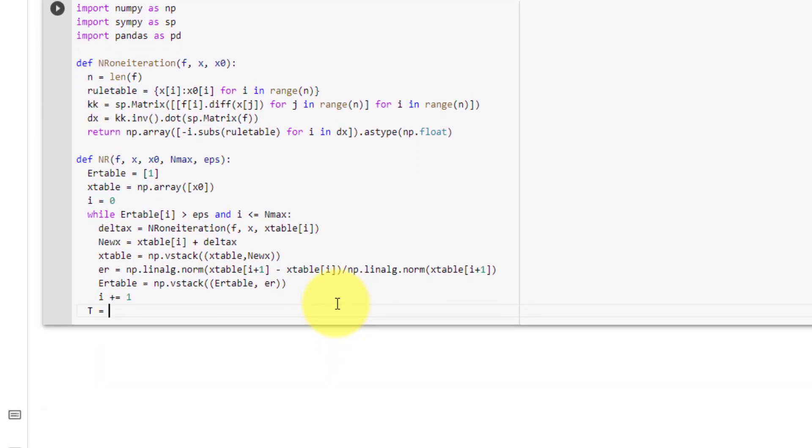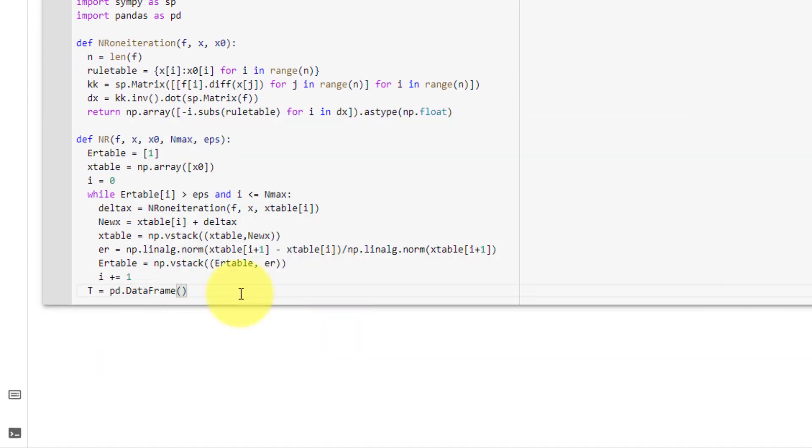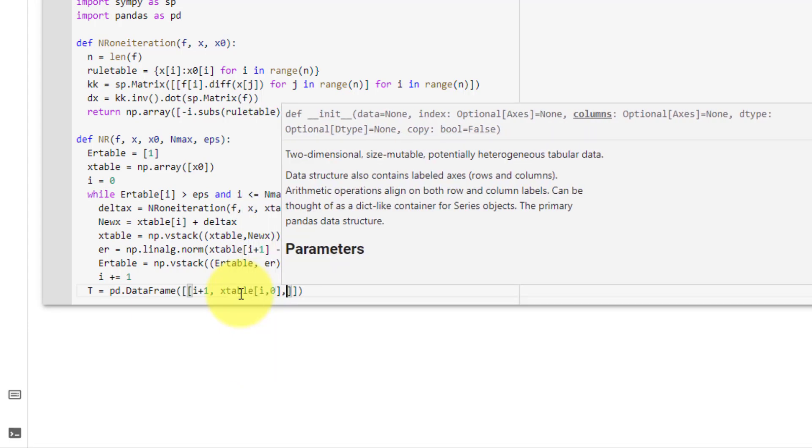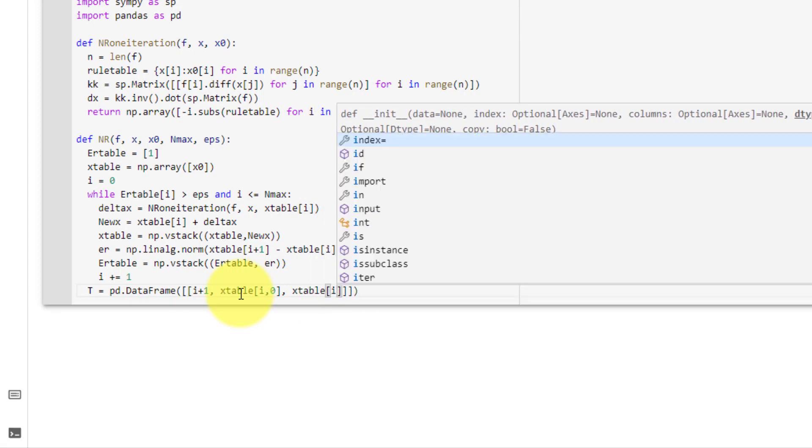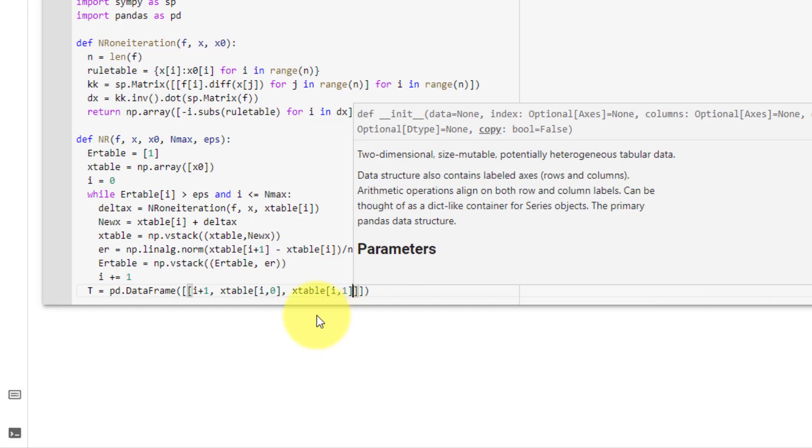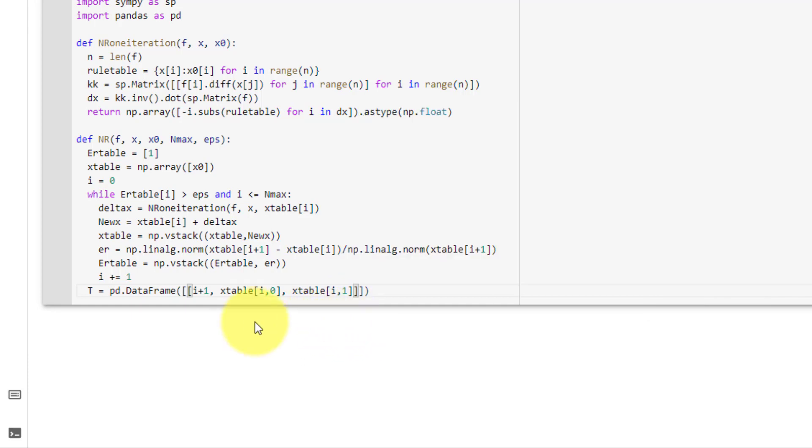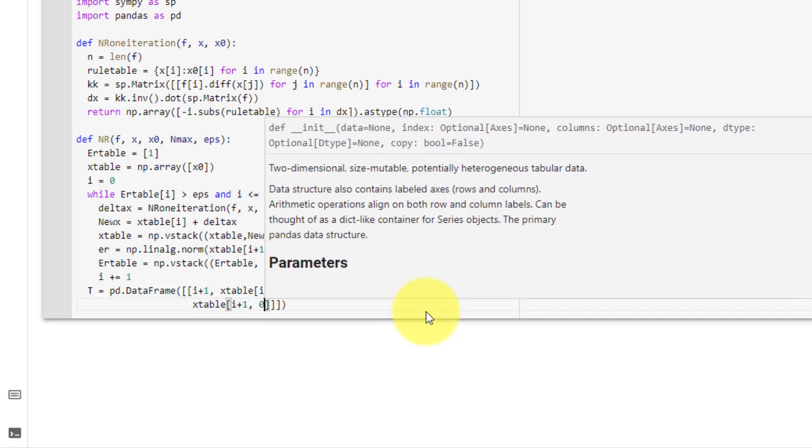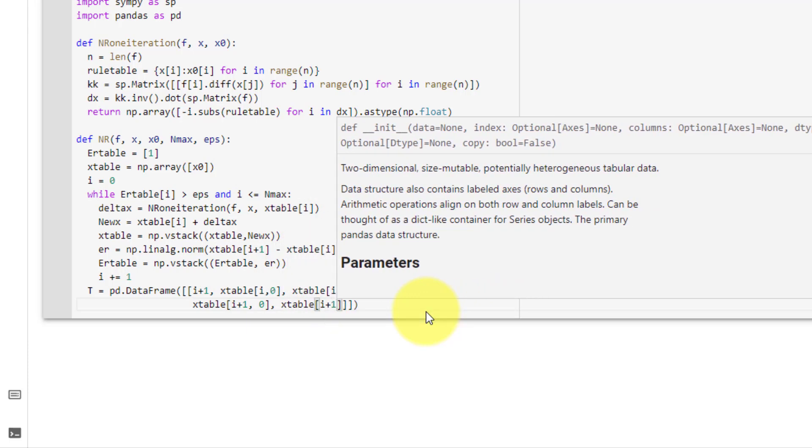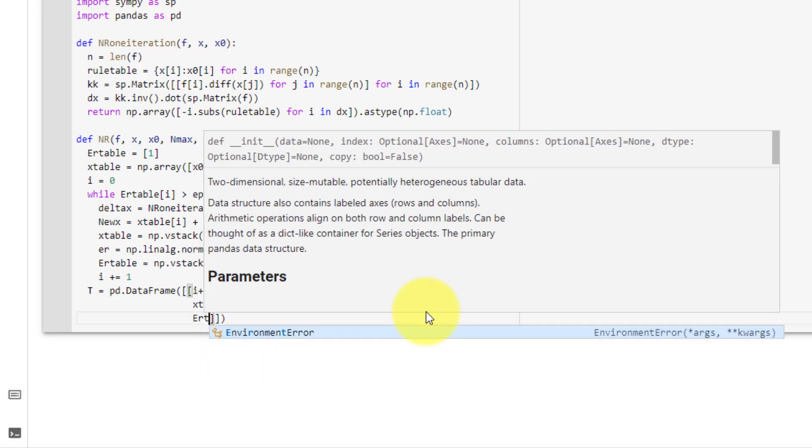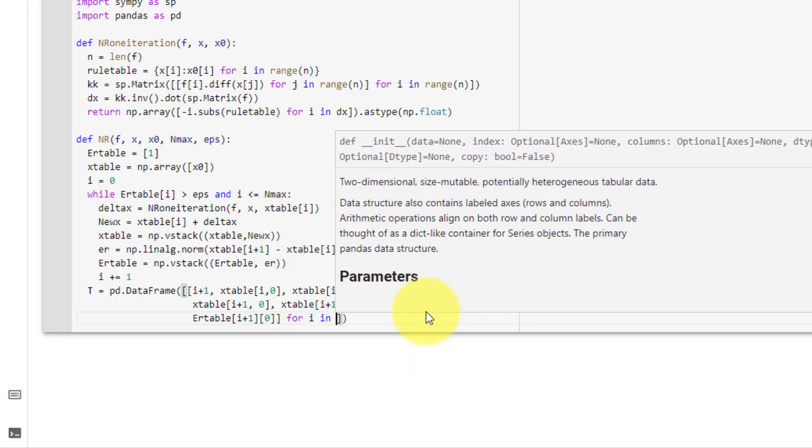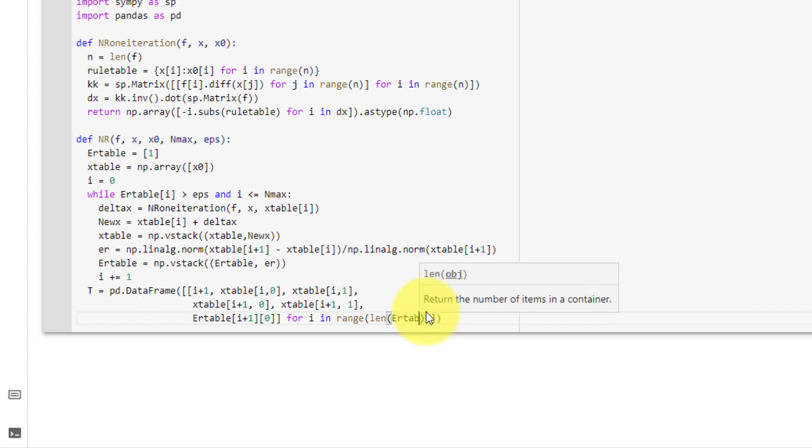And now we will build our table t equal to pandas data frame, and then a list comprehension, where the first column is i plus 1. The second column is x1, which is x table at i, 0. The third column is x2, which is x table at i, 1. If we have more variables, we will need an x table at i, 2, and so on. But in this case, we only have two variables. And then our next column will be x table at i plus 1 and 0. Then our x table at i plus 1 at 1. And finally our error table at i plus 1, another square bracket and 0. And our for loop will be for i in range of the length of er table minus 1.